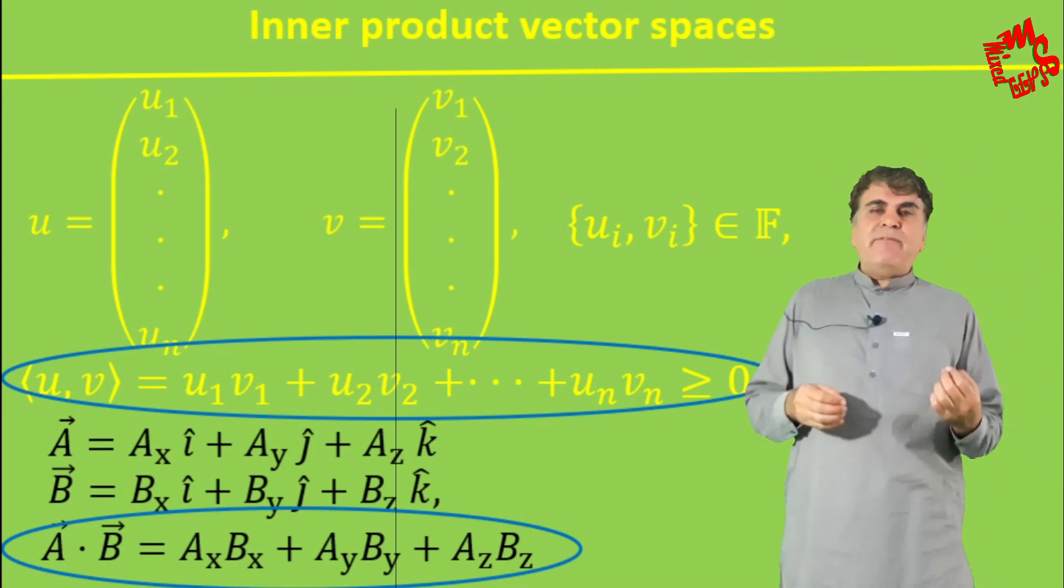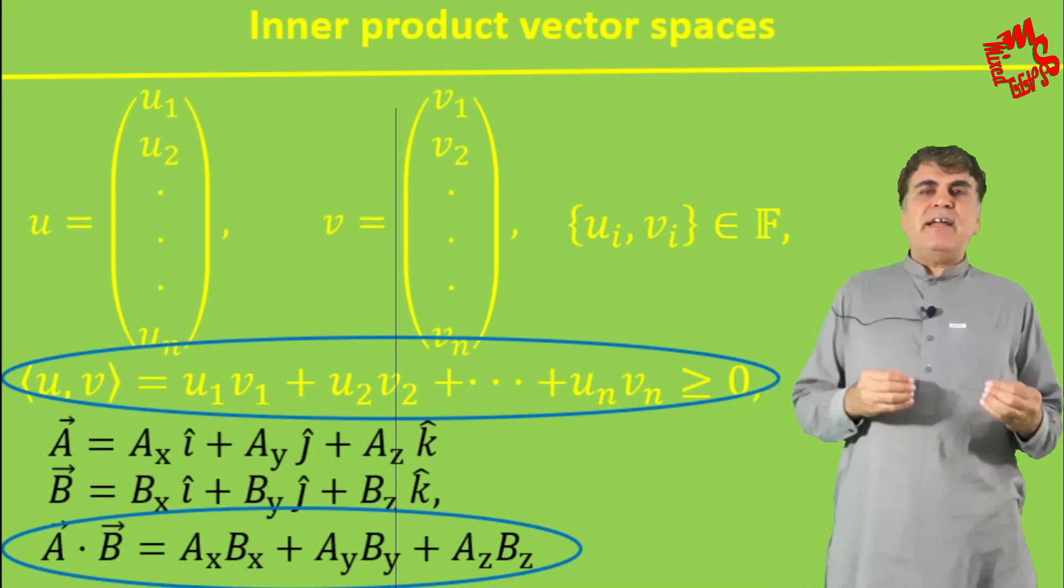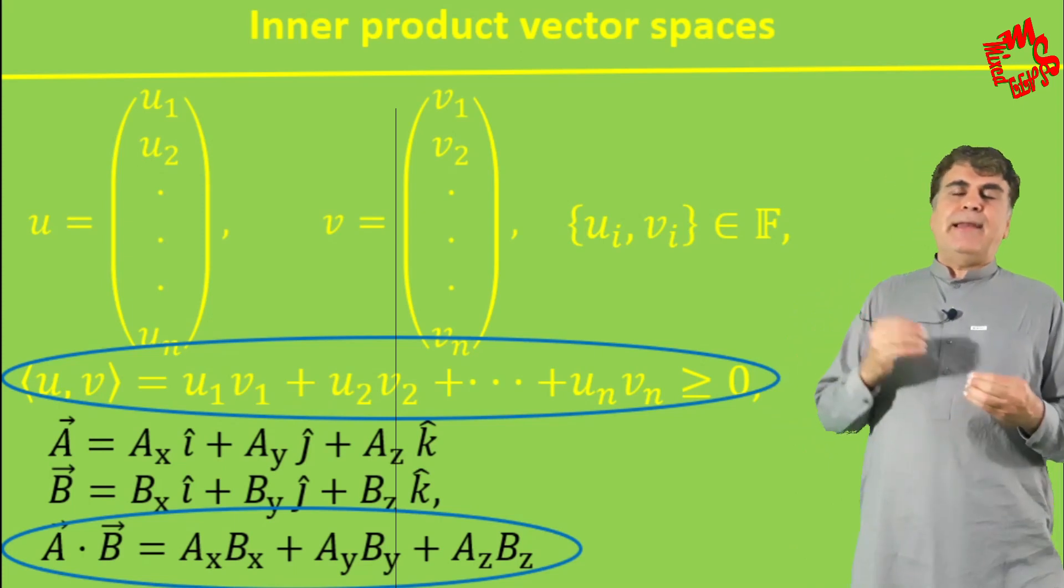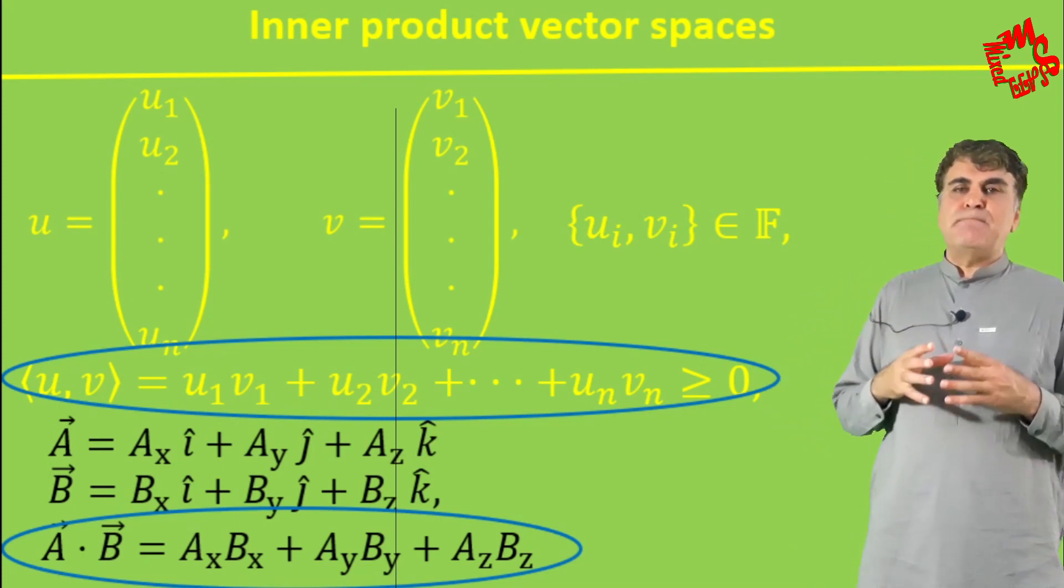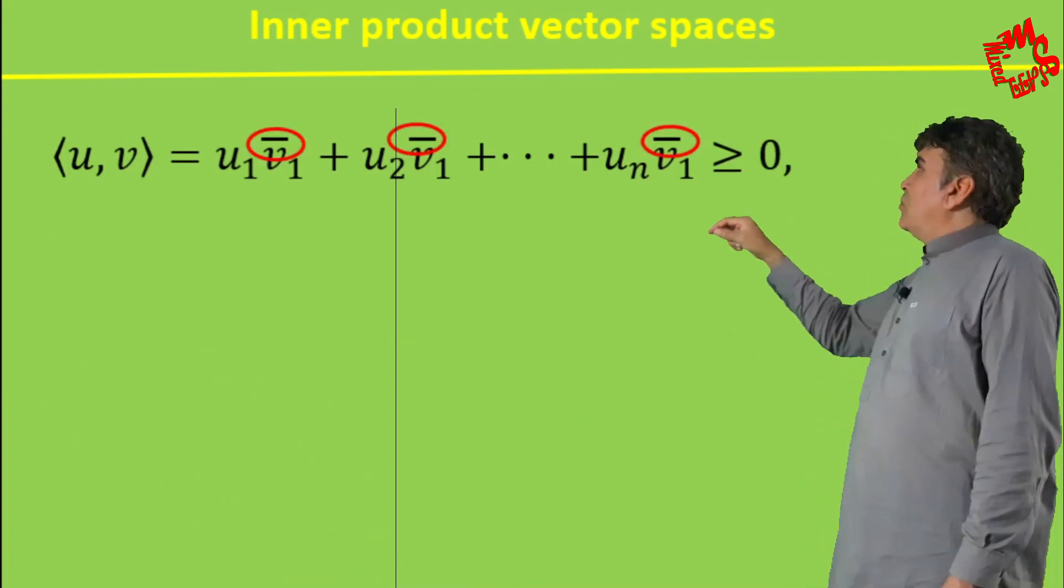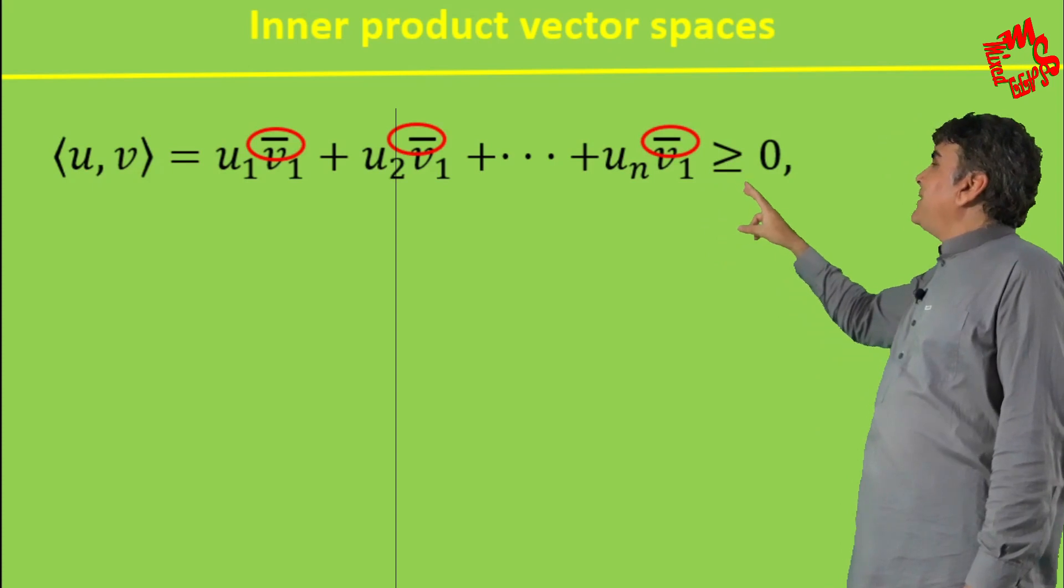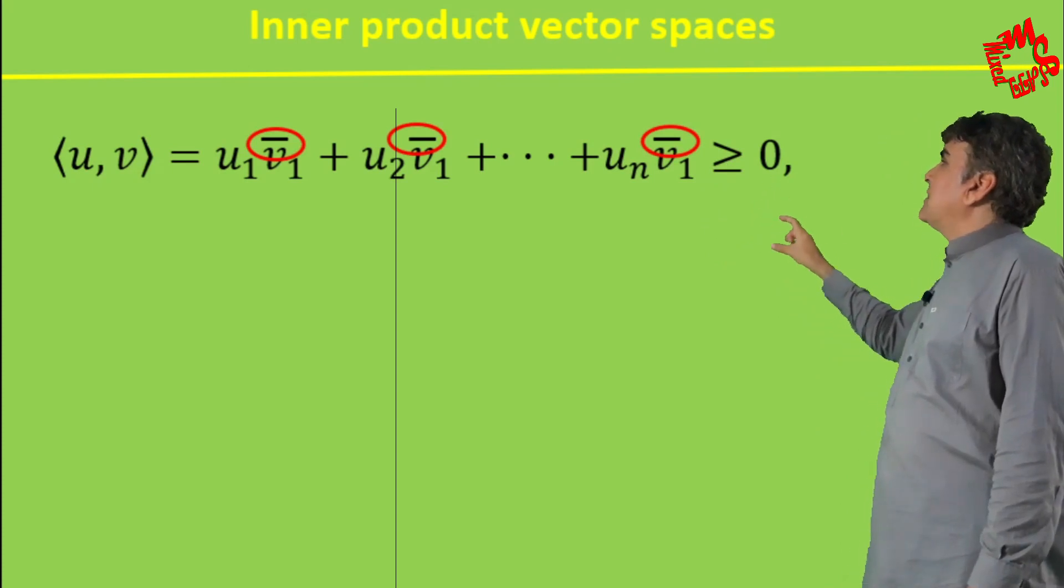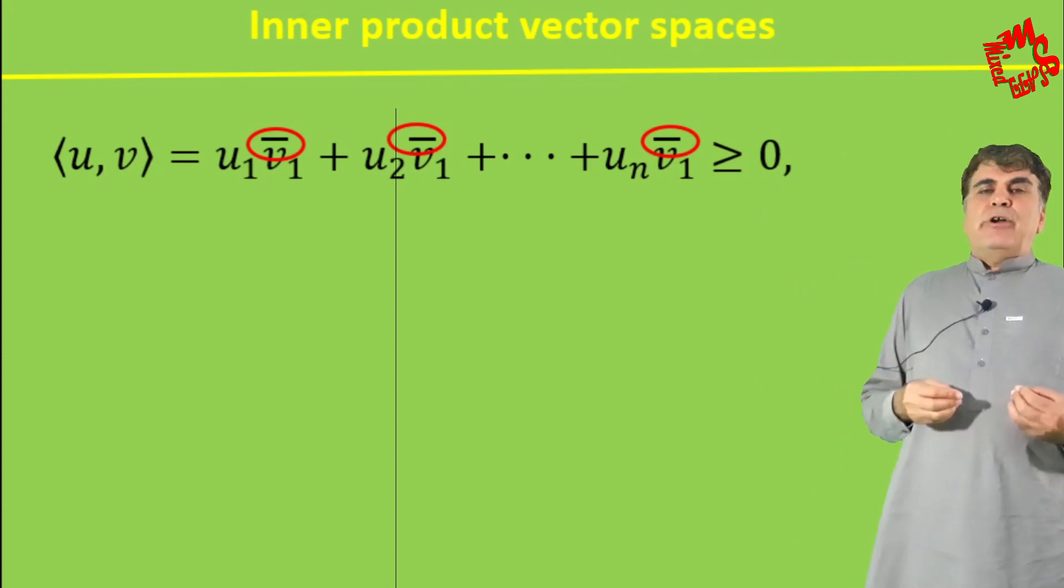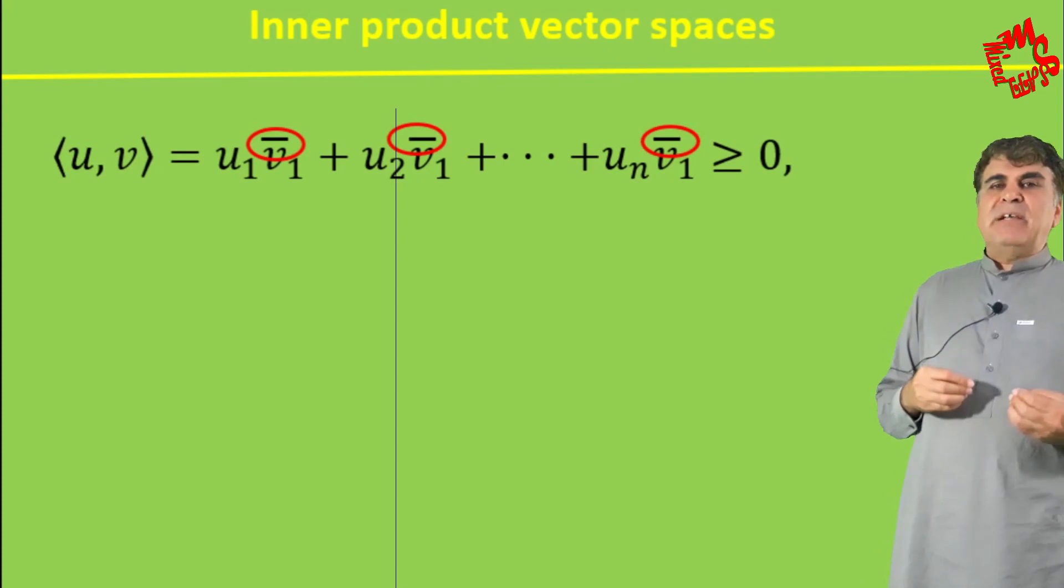Now if the field F belongs to the set of complex numbers, then in order to validate the commutative property of inner product, a little change in the definition is made in the form of this, where the bar over the elements of V in fact represents the complex conjugate.